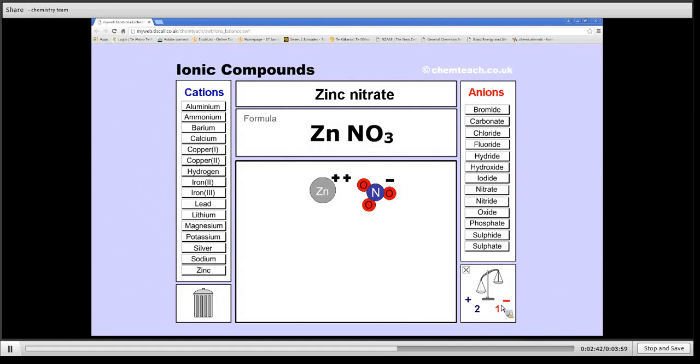Now we've got too few nitrates because there are too few negative charges, so to solve that we add a nitrate by clicking on nitrate. We now have two negative charges and two positive charges, so it is now the correct formula of Zn, bracket NO3, bracket 2.